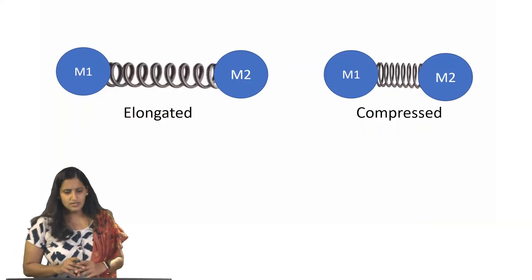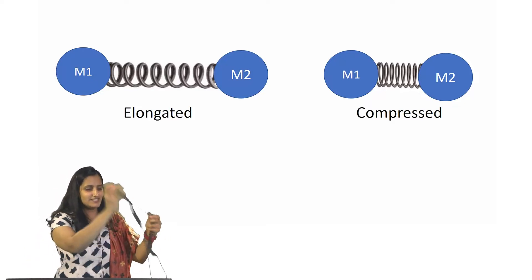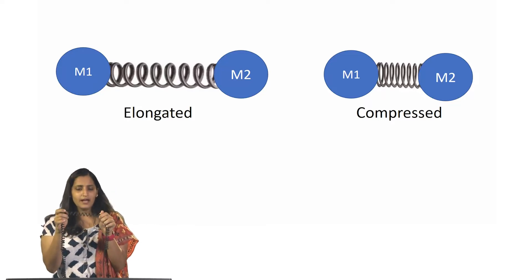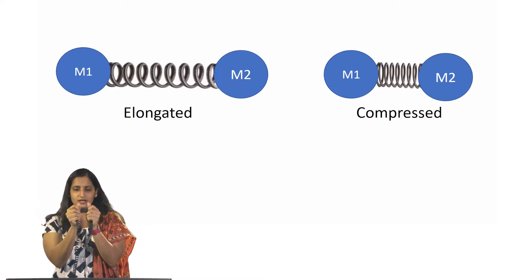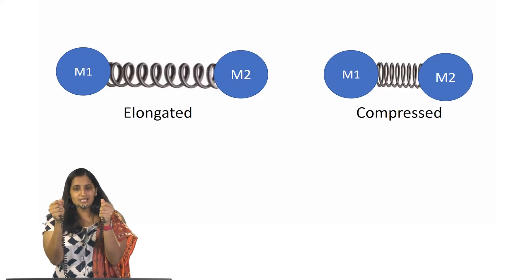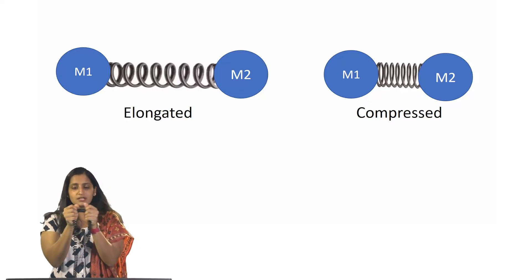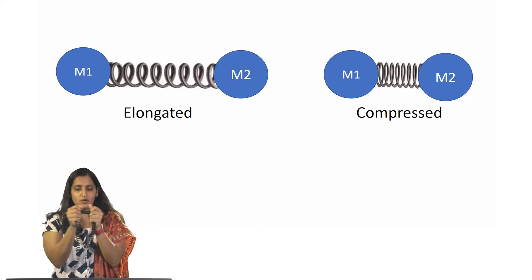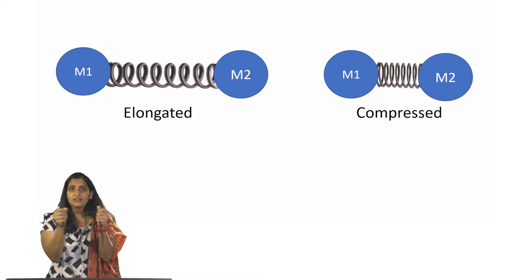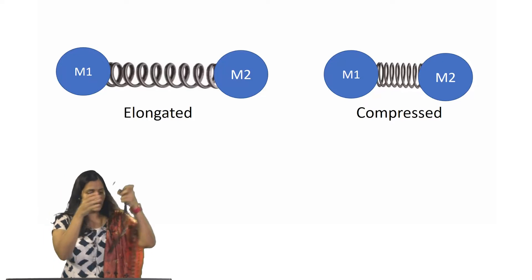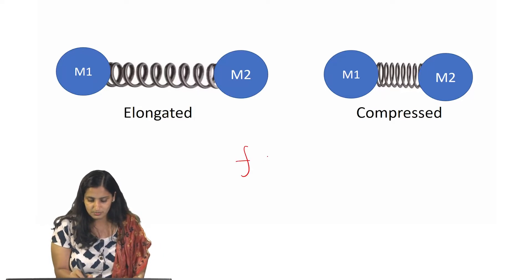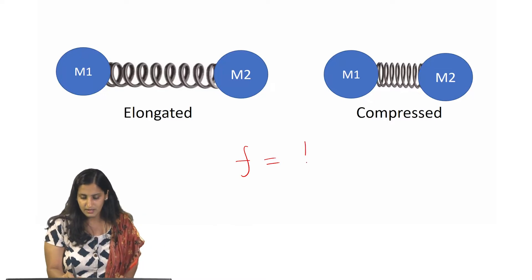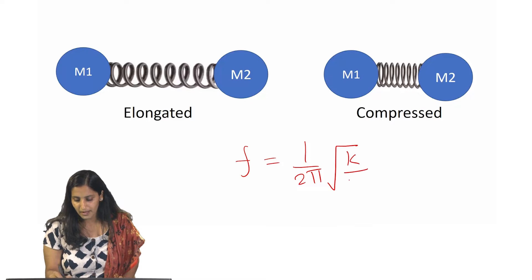Before we go ahead to IR, I want to talk about springs — and you might find it interesting. Imagine I have a spring with two masses tied to it. You can either have the spring compressed together or stretched to make it elongated. So it can vibrate — this is the kind of stretching that this spring can do. Going back to physics principles, the frequency with which this particular spring can vibrate is given by f = 1/(2π) × √(k/μ).